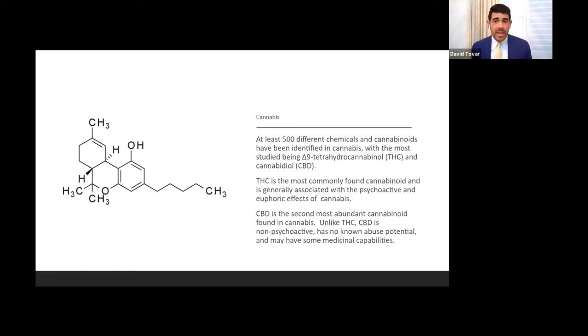There's 500 different chemicals within the cannabis plant. But generally, we just talk about two. We talk about delta-9 tetrahydrocannabinol, which is a really big word for THC, the substance that primarily is associated with the psychoactive effects, the high and the euphoric effects. And then there's CBD, which is another chemical found in it. Unlike THC, it's non-psychoactive, it has very little or no potential for abuse, and there's some research on possible medicinal capabilities of it. So how we talk about these substances really matters, because there's so many different substances within this plant.